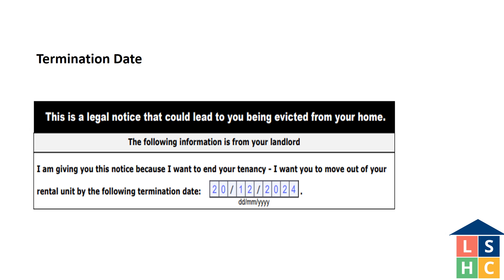This notice cannot be posted on the door of the rental unit or sent by text message to the tenant. You could send the notice by email as long as the landlord and tenant agreed to service by email in writing. This agreement can be recorded in the standard form of lease agreement or the Landlord and Tenant Board form consent to service by email. However, this agreement can be revoked at any time in writing to the other party.